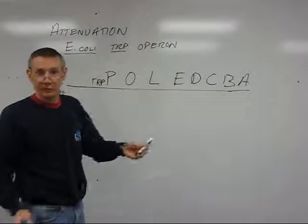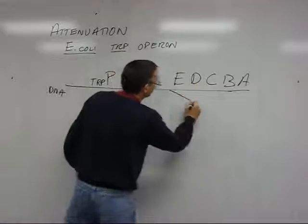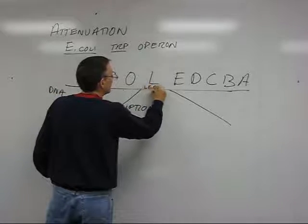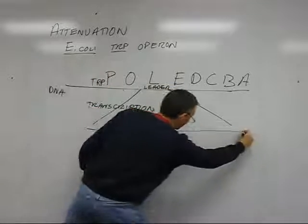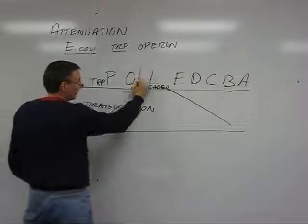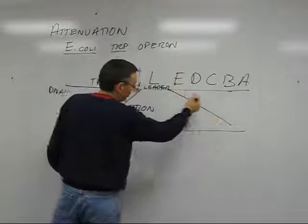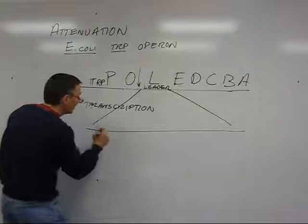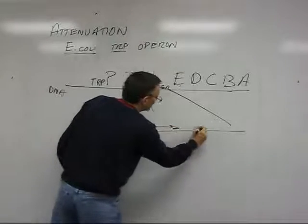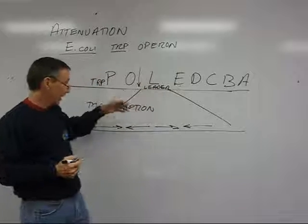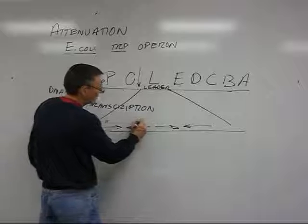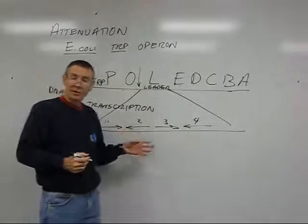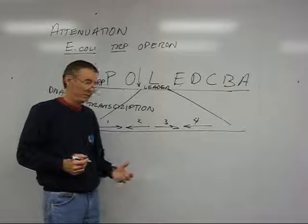The second level of control is what's known as attenuation. To think about that, we need to look at this little region here and consider the RNA that's transcribed from this leader region. In that RNA, you have this little leader sequence where transcription starts. There's a series of four palindromes — a four-part palindrome in the leader DNA. When transcribed, this gives you four regions: region 1, which is complementary and reverse to region 2, which is complementary to region 3, which is complementary to region 4. There's a variety of ways this RNA could fold with secondary structure, pairing different parts of the leader sequence.